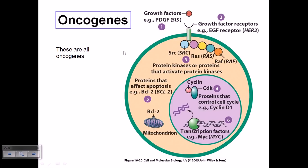Welcome again. We have discussed how a normal cell can become a cancerous cell, and we have also discussed the genetic basis of cancer and how a proto-oncogene can be converted into an oncogene. There are three major categories of genes that, when transformed, will become oncogenes: growth factor genes or growth regulatory genes, apoptotic genes like BCL2, and tumor suppressor genes like p53 or p21.